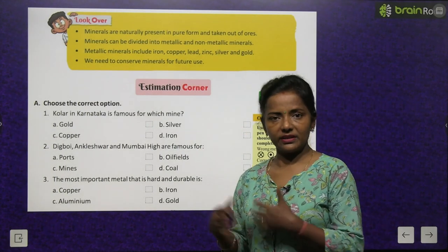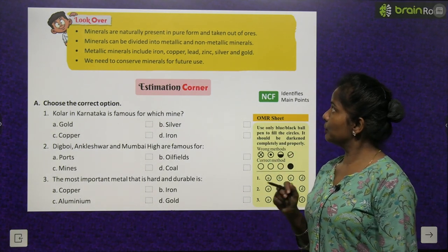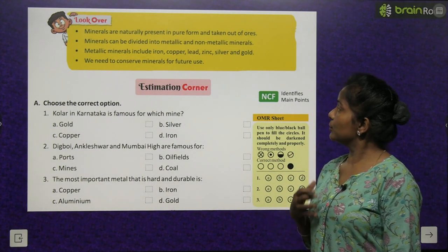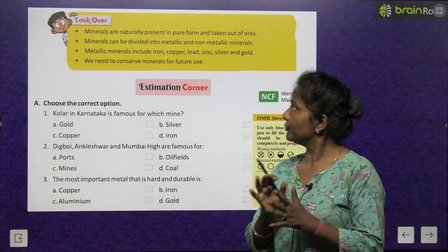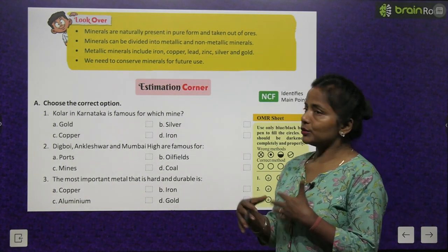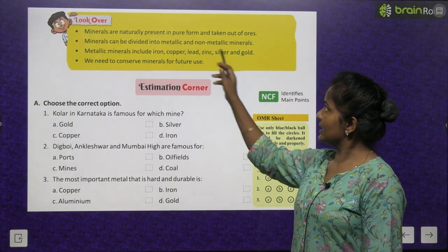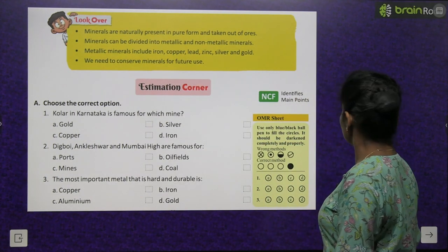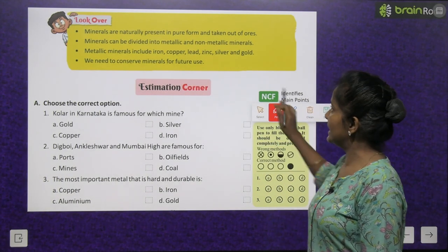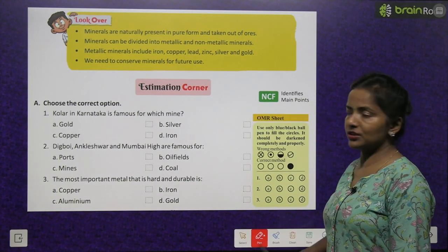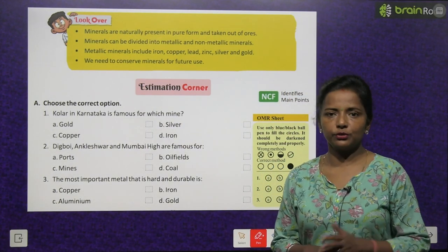Chapter summary: minerals are naturally present in pure form and taken out of ores. Minerals can be divided into metallic and non-metallic minerals. Metallic minerals include iron, copper, lead, zinc, silver and gold. We need to conserve minerals for future use.